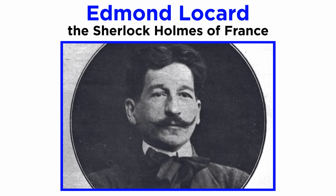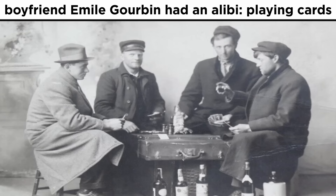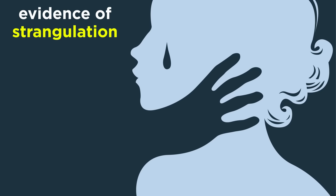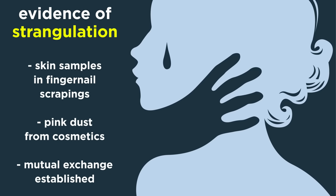Dr. Locard solved many cases by applying this principle, which is why he is known as the Sherlock Holmes of France. In one investigation in 1912, a woman named Marie Lattel was found dead at her home. Her boyfriend, Emile Gorbin, was interrogated and claimed he was playing cards at a friend's house. This claim was supported by all his friends, and he was let go. However, when Locard examined the body, he found definite evidence of strangulation. He called the boyfriend for investigation, and on scraping his fingernails, skin samples belonging to the woman were obtained. The presence of pink dust from the woman's cosmetics was also established on the suspect. Thus, mutual exchange was established, and the boyfriend was convicted on the basis of incriminating evidence.